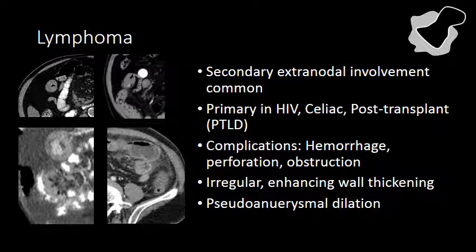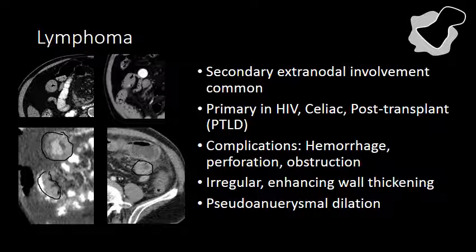Small bowel lymphoma can result in hemorrhage or GI bleeding, which is one of the most common complications. Less common is perforation or obstruction, although those often will present clinically due to the severity. On the left-hand side of the screen, we see two examples of low-grade secondary involvement of the small bowel. In the lower left-hand image, we see extensive involvement of the small bowel from an anaplastic lymphoma. Here we also see a diffuse large B-cell lymphoma involving a short segment of bowel that did result in bowel obstruction.